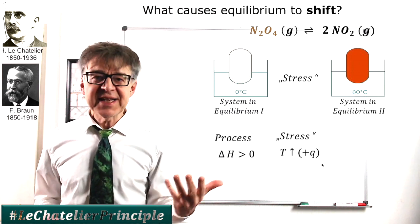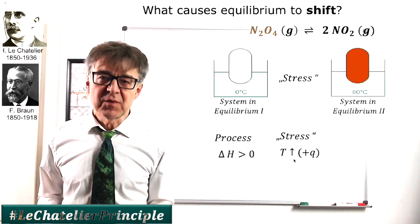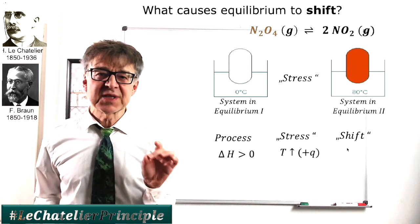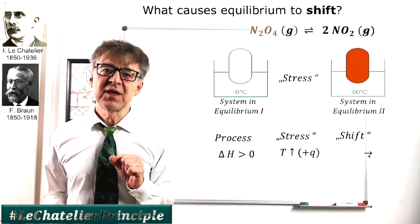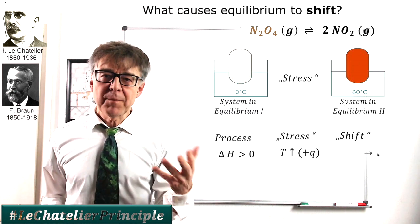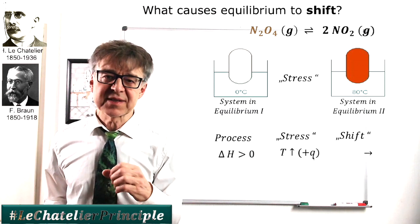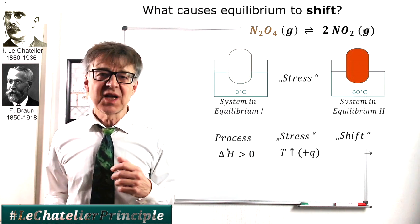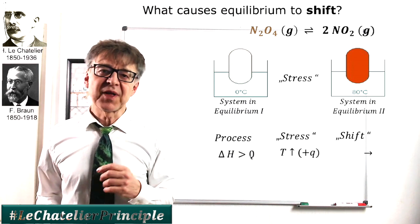If I add heat to the system, that is, rising the temperature, the equilibrium will shift in the direction in which heat is consumed, that is, to the right side. Adding of heat is one possibility to exert stress on the equilibrium. In fact, with all endothermic reactions, equilibrium shifts to the right with increasing temperature.